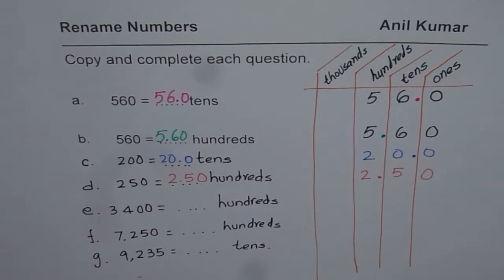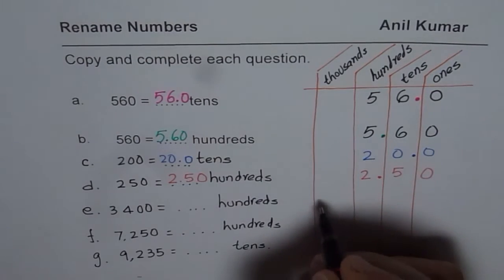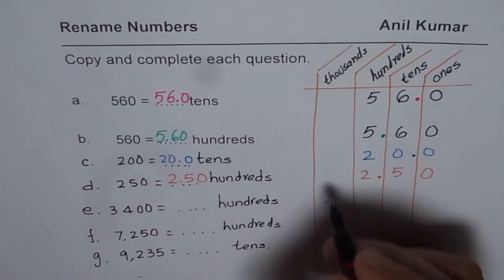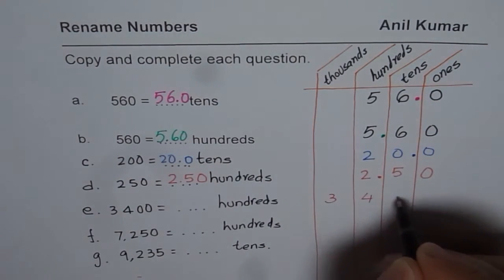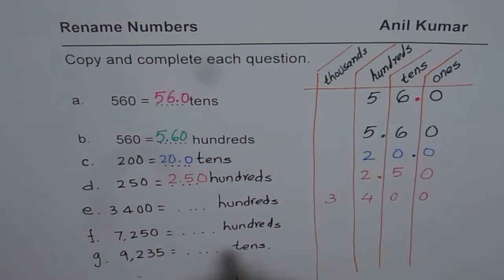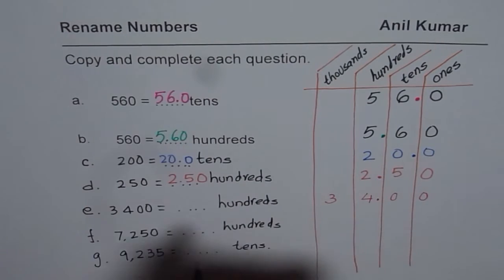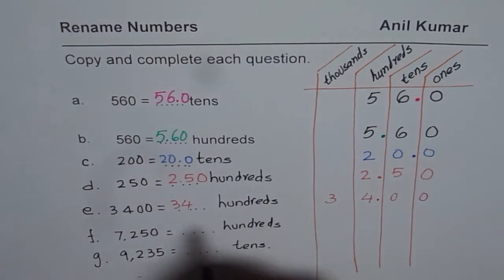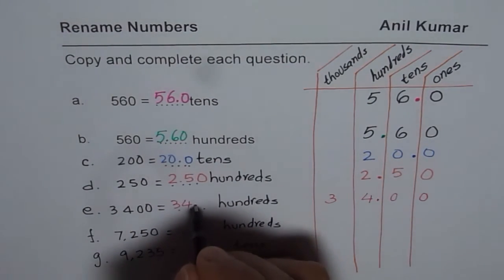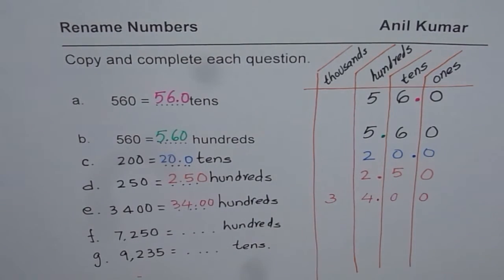Let us take the next number, which is 3,400. So 3 comes in the thousands place, 4 in hundreds and zeros thereafter. Hundreds, put a decimal there. What you get is 34 hundreds or 3,400. You could write this as decimal zero zero also. I hope now the concept is absolutely clear.